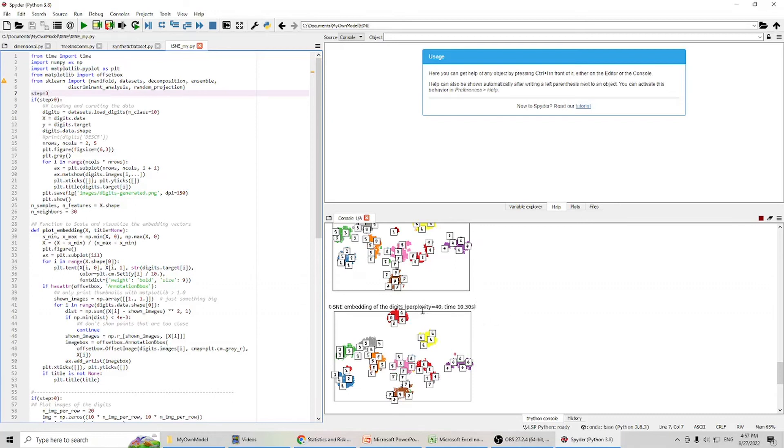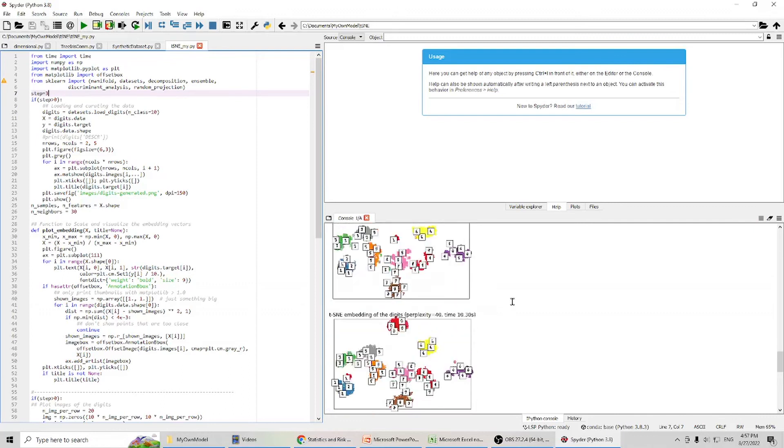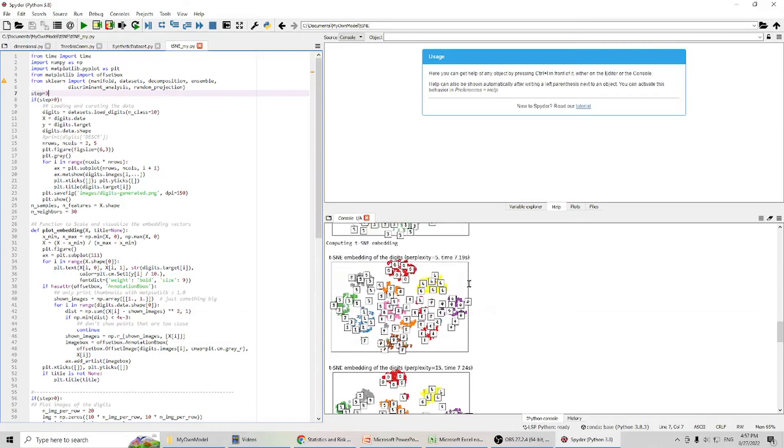And, in Python, the perplexity is from 5 to 50. So, okay, now we can go back. When we use 5 as our perplexity, you see the data still have a lot of overlap. And, it took 7.19 seconds.